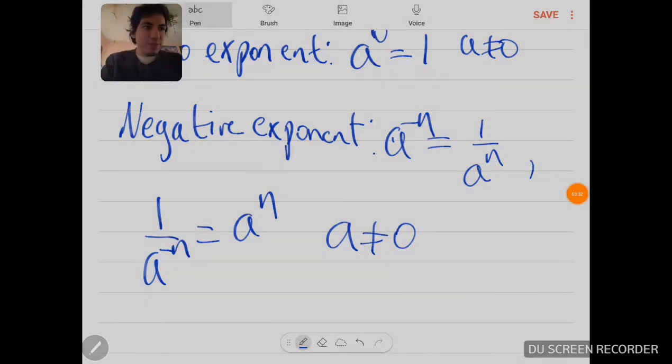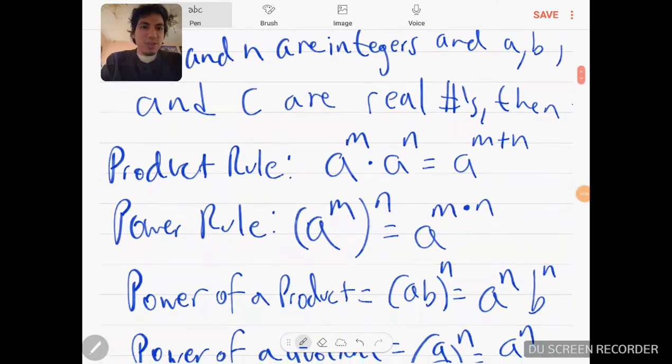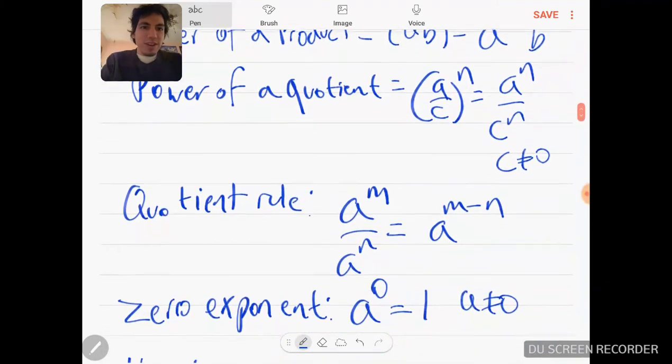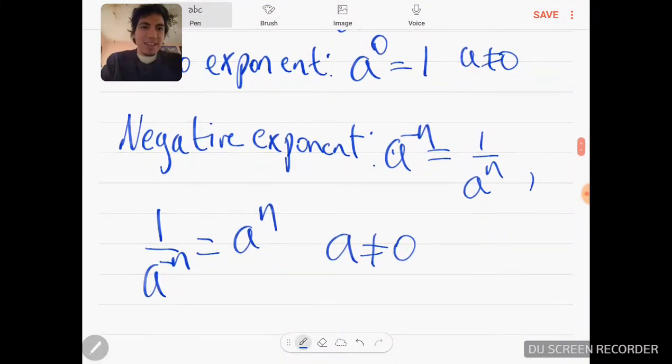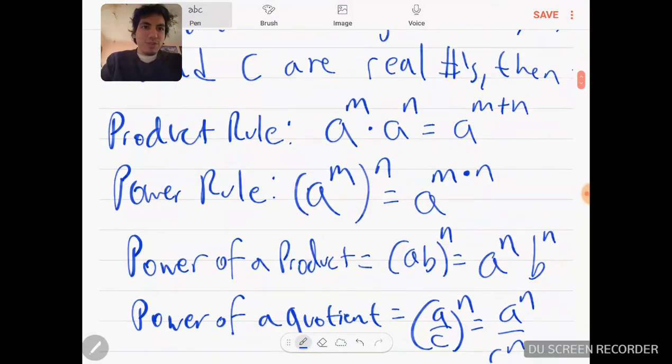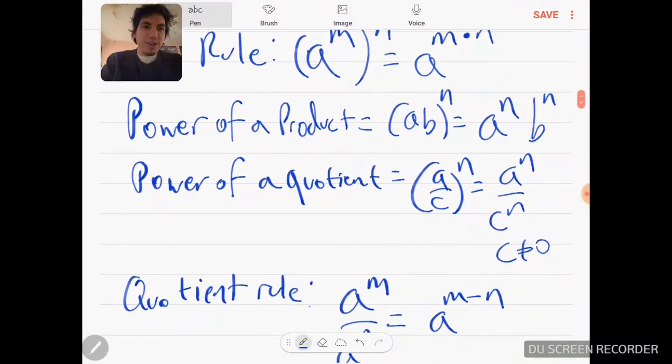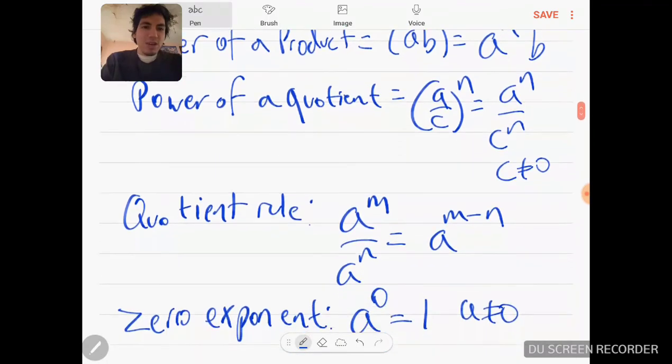So let's review real quick: it's one, two, three, four, five, six, seven—seven rules you have to remember. Product rule, power rule, power of product, power of quotient, quotient rule, zero exponent, and negative exponent.